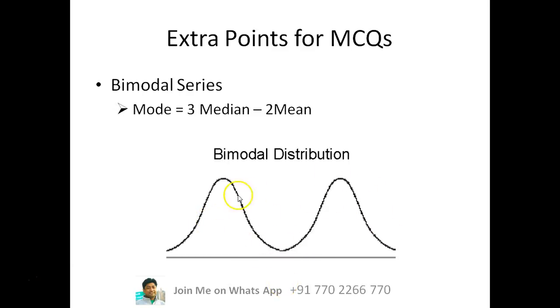In such kind of cases, always remember this formula: mode is equal to 3 times the median minus 2 times the mean. Now this is a formula where direct questions will come. You will be given either two of the three values and you will be asked to calculate the third value.